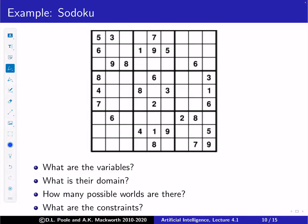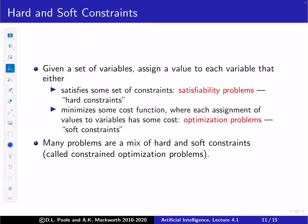The constraints in Sudoku are that the numbers 1 to 9 must appear exactly once in each row, each column, and each 3×3 block — these correspond directly to the rules of Sudoku. Given a set of variables, we can either satisfy hard constraints (satisfiability problems) or minimize a cost function (optimization problems with soft constraints). Most real problems mix both.